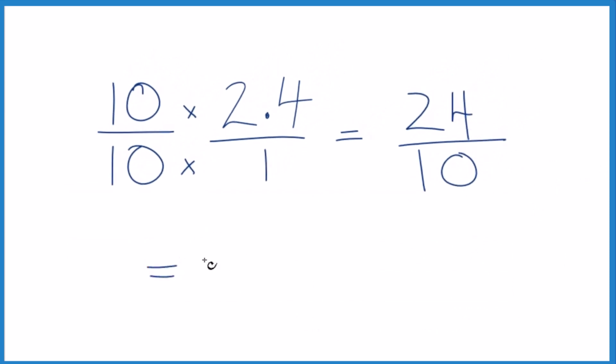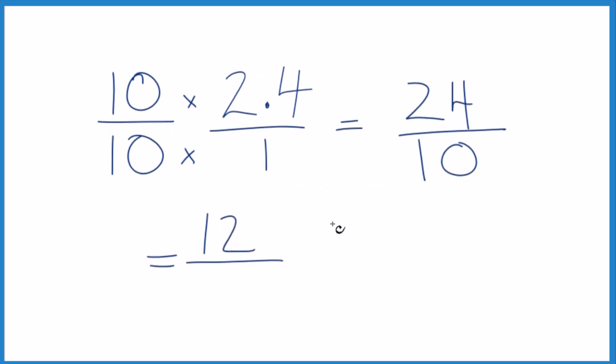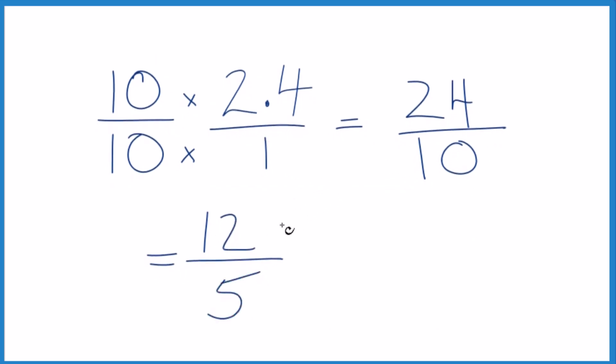24 divided by 2 is 12, and 10 divided by 2 is 5. So the decimal 2.4 equals the fraction 12 fifths.